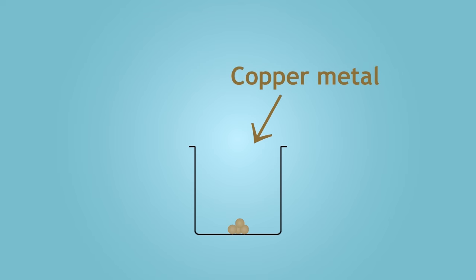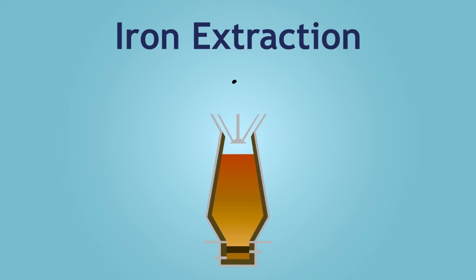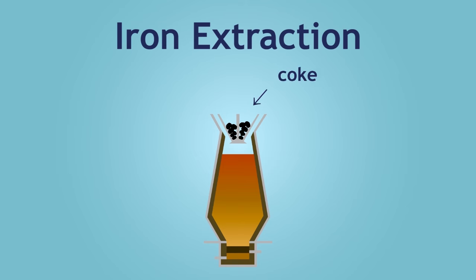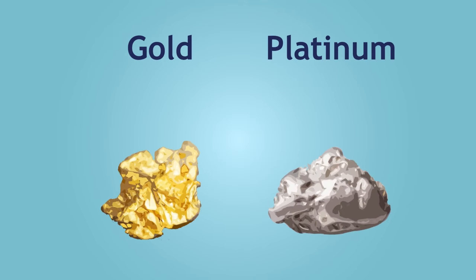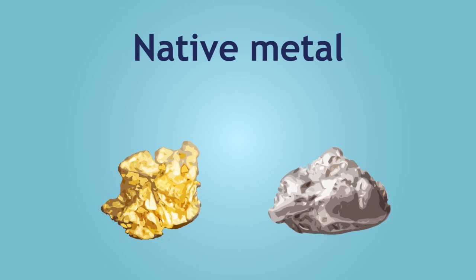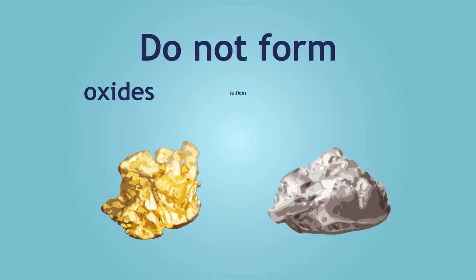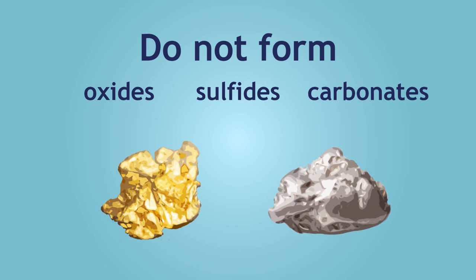In another lesson, you will learn how to extract iron using a form of carbon known as coke. Some metals, such as gold and platinum, are not found in ores but rather exist naturally as native metal. Note that these are less reactive metals and therefore do not form oxide, sulphide, or carbonate compounds.